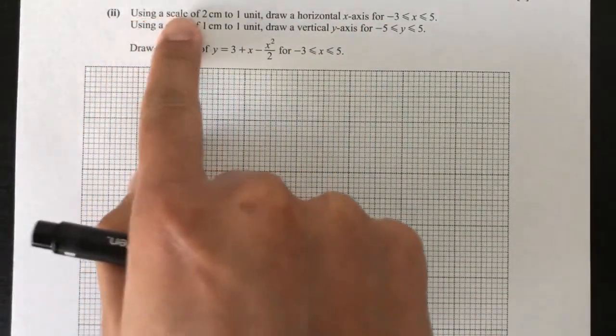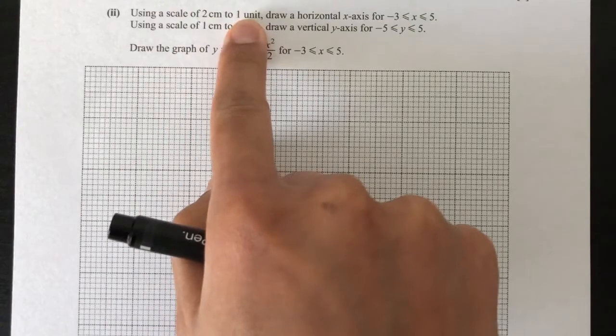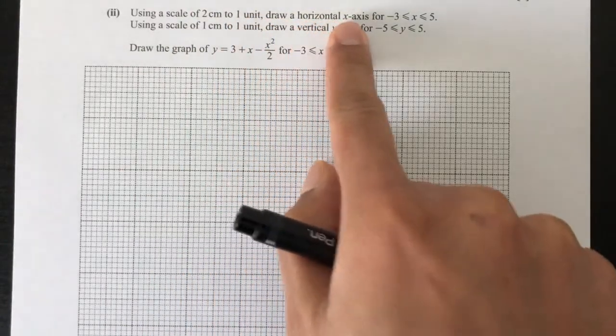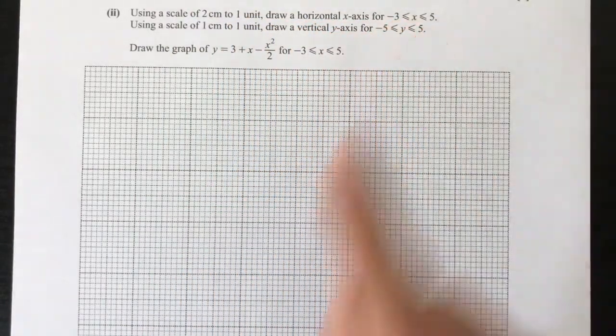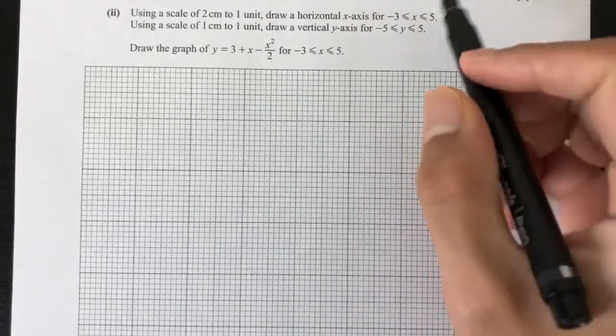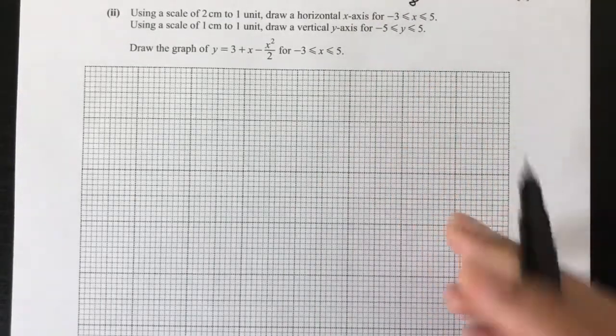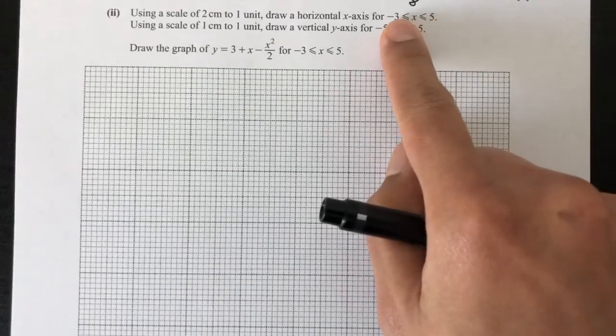Using a scale of 2 centimeters to 1 unit, draw a horizontal x-axis from -3 to 5. So from -3 to 5, we have 8 units, right, because 5 minus -3 will be 8.